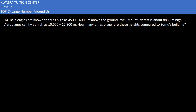Bald eagles are known to fly as high as 4,500 to 6,000 meters above ground level. Mount Everest's height is 8,850 meters. Airplanes can fly as high as 10,000 to 12,800 meters. The question is: how many times bigger are these heights compared to the Somos building? The Somos building's height is 40 meters. We will compare the bald eagle, Mount Everest, and airplane heights with the Somos building.